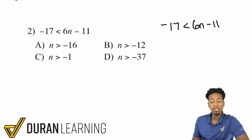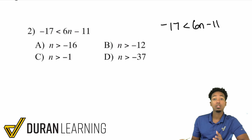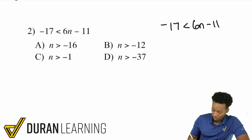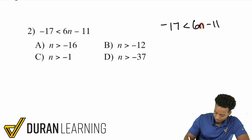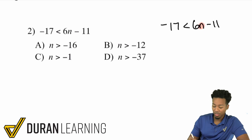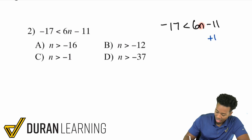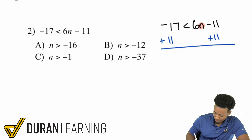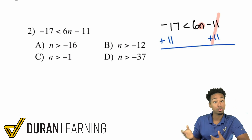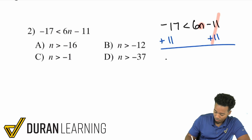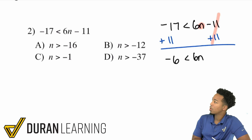We have negative 17 is less than 6n minus 11. Remember, if you've gone through solving equations already — which you should have done already — we want to get the n by itself. To do that, we need to take care of that negative 11 and that 6. So we'll add 11 on both sides, and that cancels out, because if you subtract 11 and add 11 it cancels out. Negative 17 plus 11 gives you negative 6, so negative 6 is less than 6n.